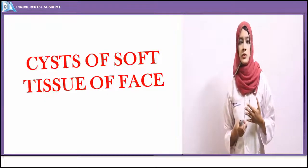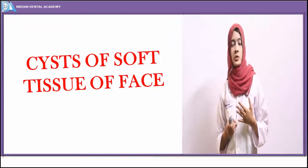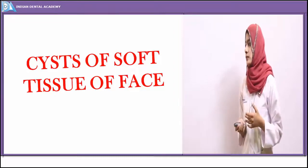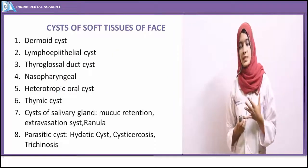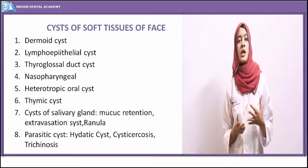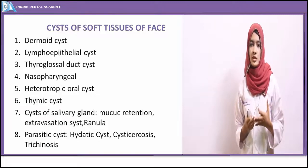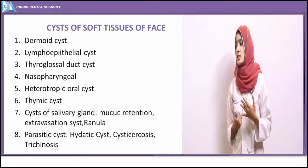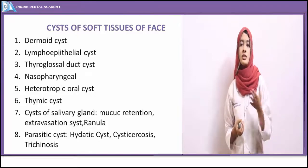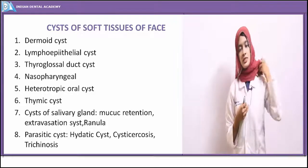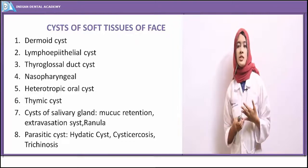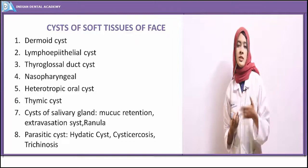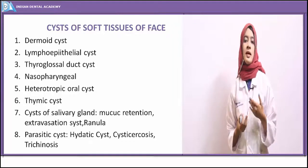We have seen the cysts of jaws. Now we are going to see the cysts of soft tissues of the face. Cysts in the soft tissues are basically: dermoid cyst, epidermoid cyst, thyroglossal tract cyst or lymphoepithelial cyst, heterotopic oral cyst, thymic cyst, or cysts associated with salivary gland — that is the mucous retention cyst, mucocele or ranula, and the post-operative ciliated cyst of maxilla.